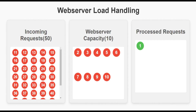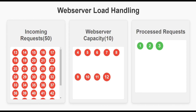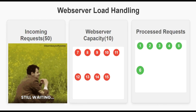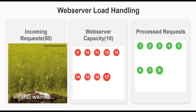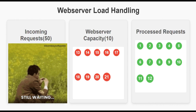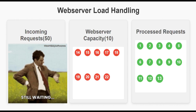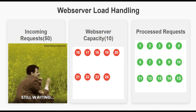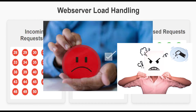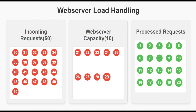Suppose at a given point in time your web server gets 50 requests. As per its maximum capacity it starts processing 10 requests. Some time is required to process each request and return the response, so during this time the remaining 40 requests need to wait. As soon as one request completes, the web server can pick one more from the queue. This results in a slow and delayed response for the remaining 40 customers, and if it keeps happening people will stop using your service. A dissatisfied customer is really bad for business.